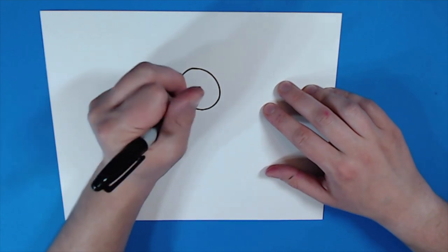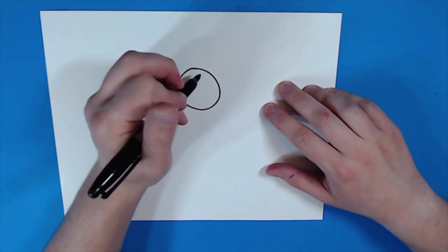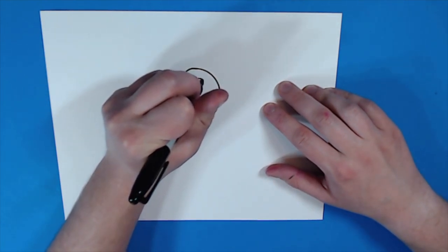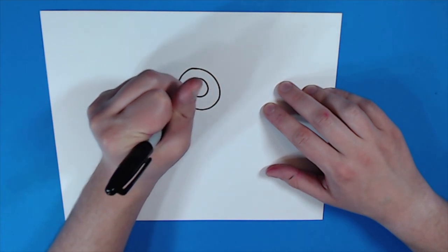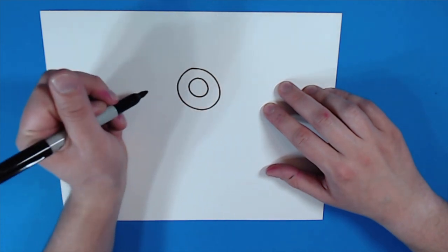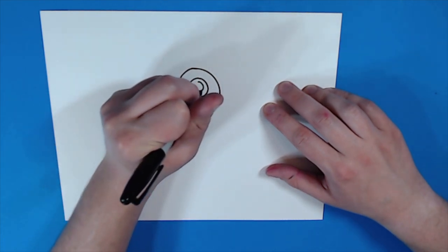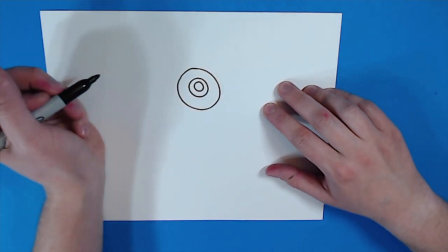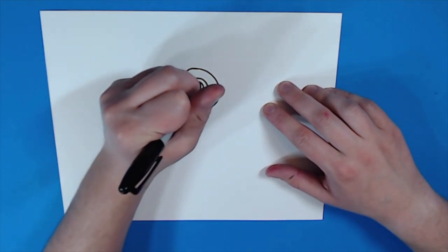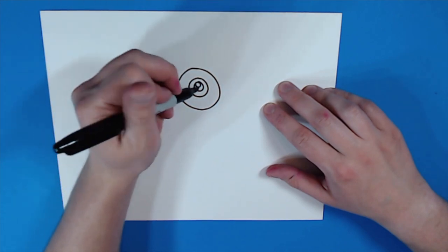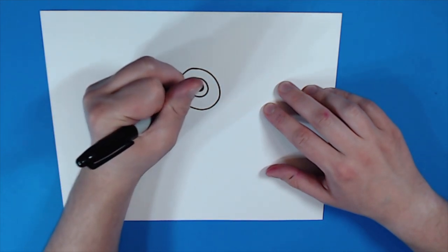Then, what I'm going to do is I'm going to draw three circles inside here. So, I'm going to draw a big circle, a medium circle, and then a small circle. And I will color in that medium circle.